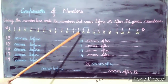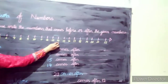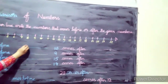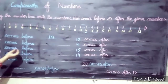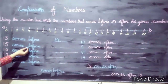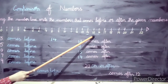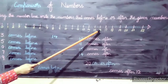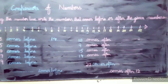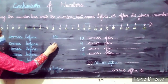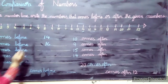So 13 comes before 14, meaning 13 is the number before 14. Next, students, 15 comes before 16. So 15 is the answer before 16.